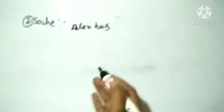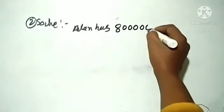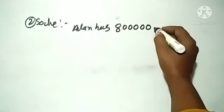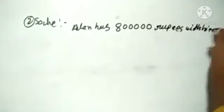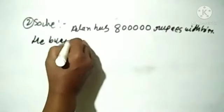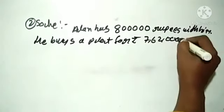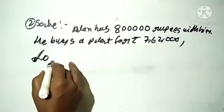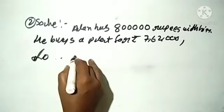We will note the digits: 1, 10, 10, 10, 10. 8 lakhs rupees with him. So he buys a plot for rupees 7,62,000.